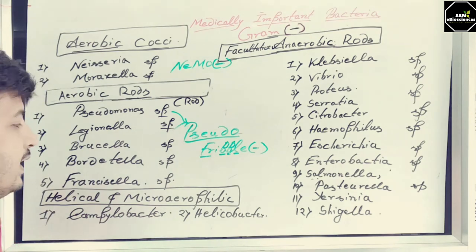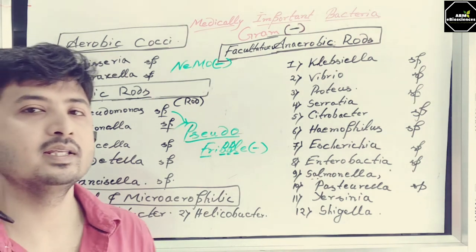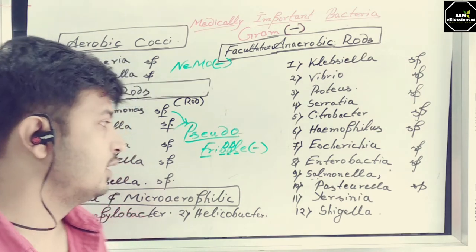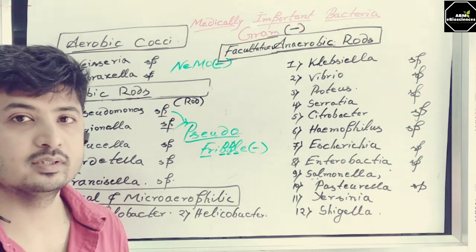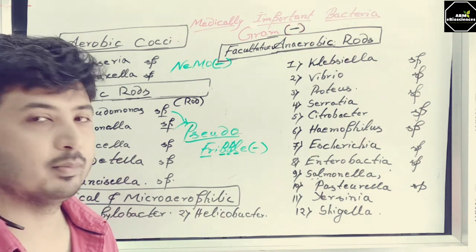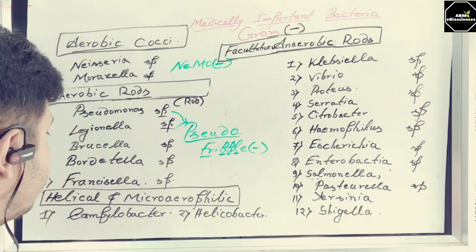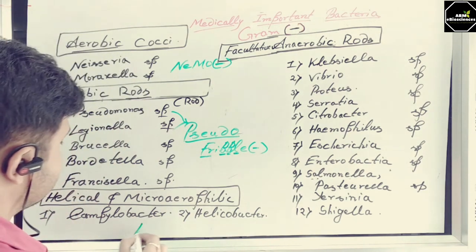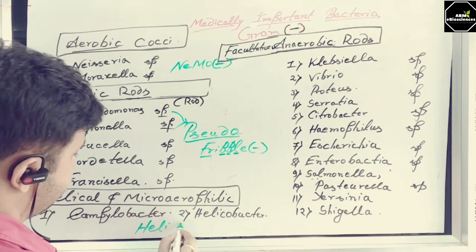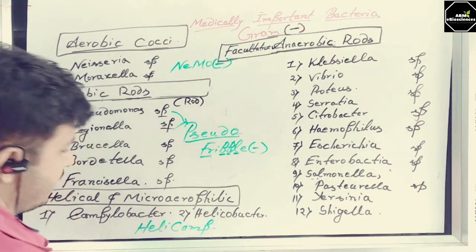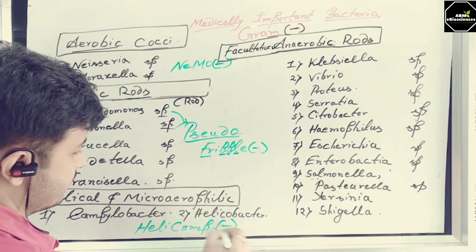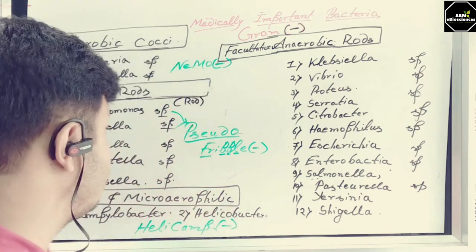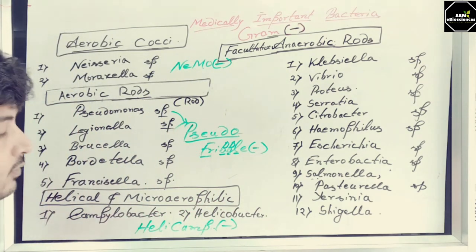The next category is helical microaerophilic bacteria, which require a lesser amount of oxygen — they cannot tolerate fully aerobic or anaerobic conditions, requiring only a very low oxygen concentration. There are two bacteria here: Campylobacter and Helicobacter. You can remember this as 'Helicamp Negative' — Helicobacter and Campylobacter. So Helicamp Negative is for helical microaerophilic gram-negative bacteria.